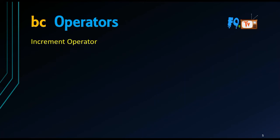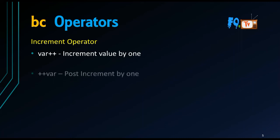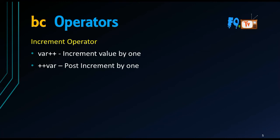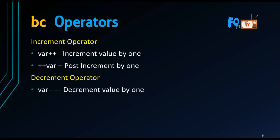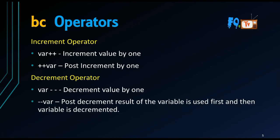Some operators: the increment operator ++ increments a value by one — for example, if you want to go 1, 2, 3, 4, you can use var++. Post-increment means the result of the variable is used first, then the variable is incremented. The decrement operator -- decrements the value by one — var-- is post-decrement, meaning the result of the variable is used first, then the variable is decremented.